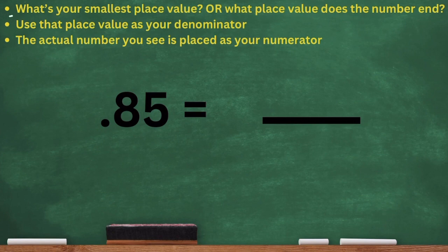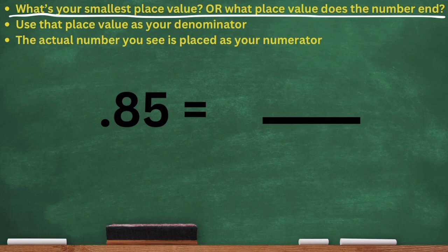Now we have 0.85, or 85 hundredths. I'm going to repeat the same steps. What's your smallest place value or what place value does the number end? We see 85, but it ends at the five. And that five is in what place value? The five is in the hundredths place.